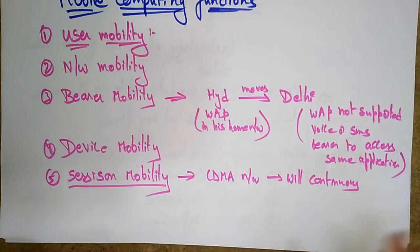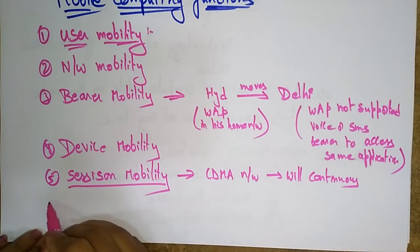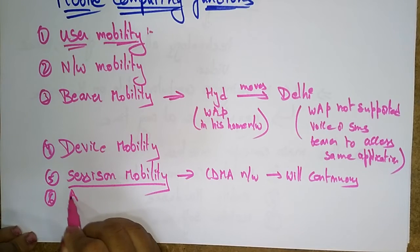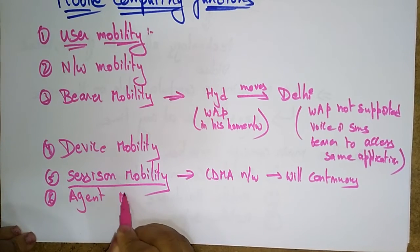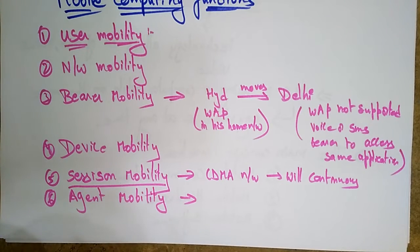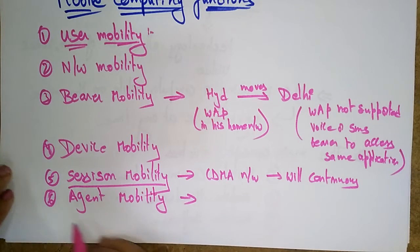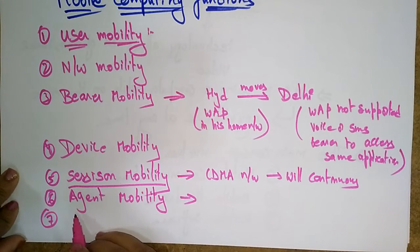The mobile computing is having the agent mobility feature. Agent mobility means the user agent or application should be able to move from one mode to another mode — moving from one configuration mode to another configuration mode.